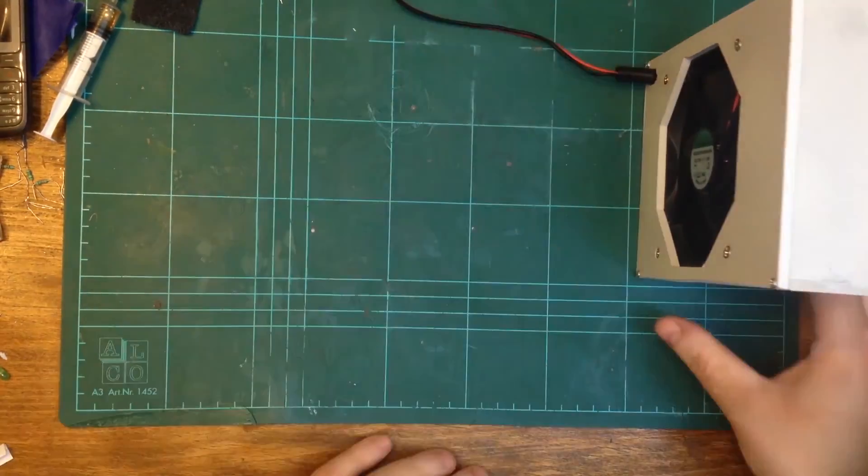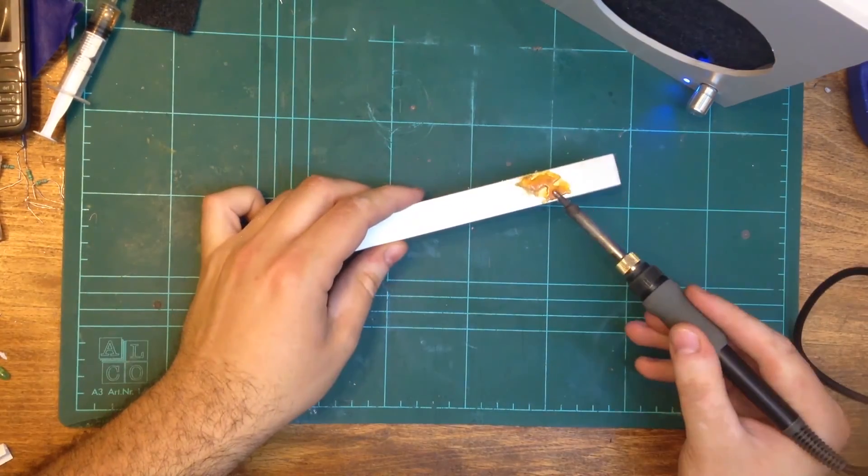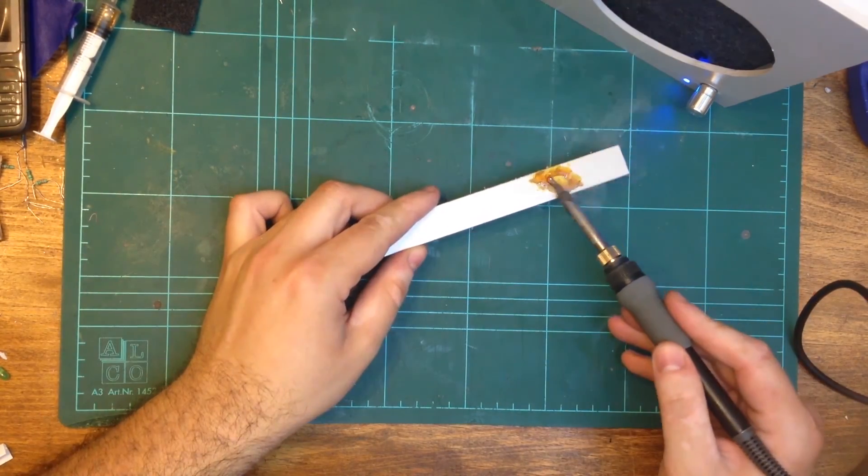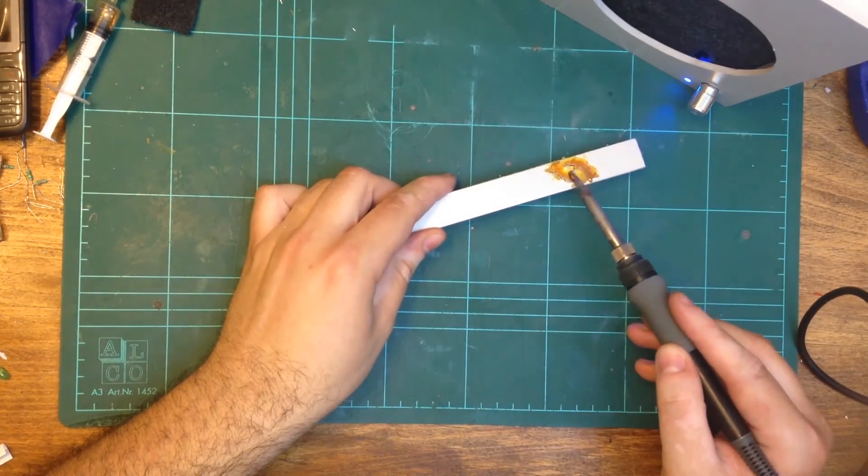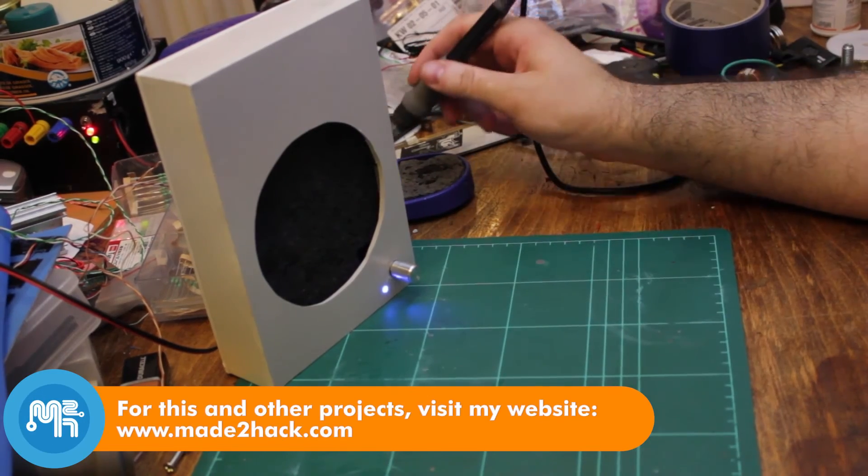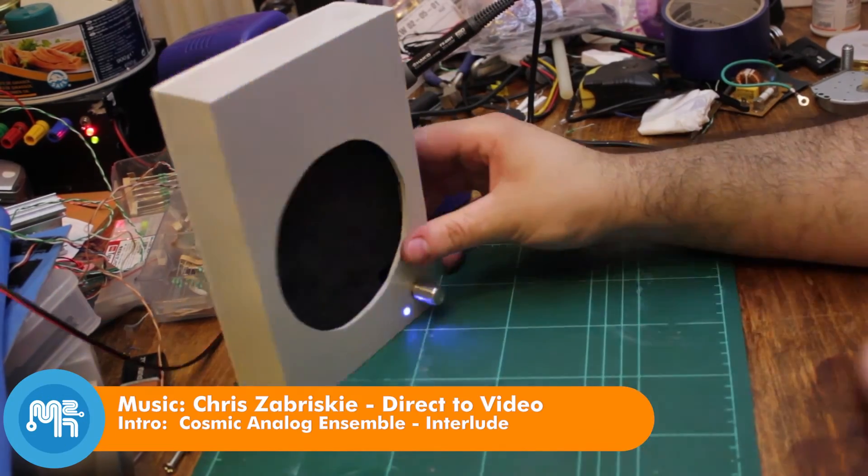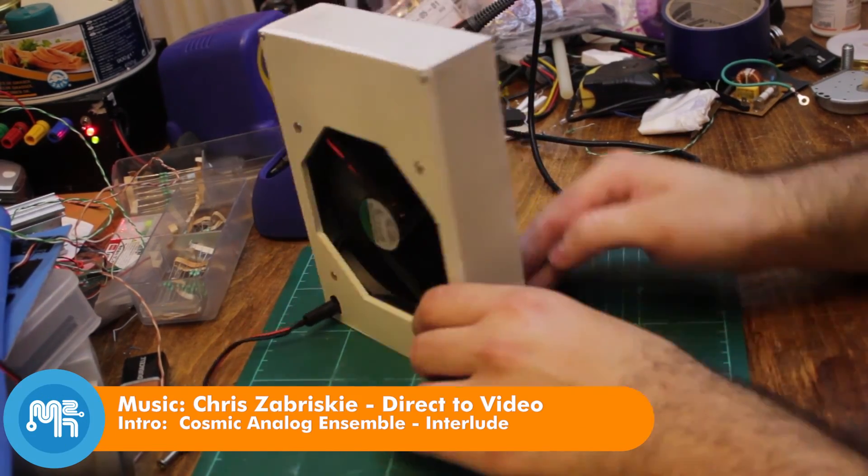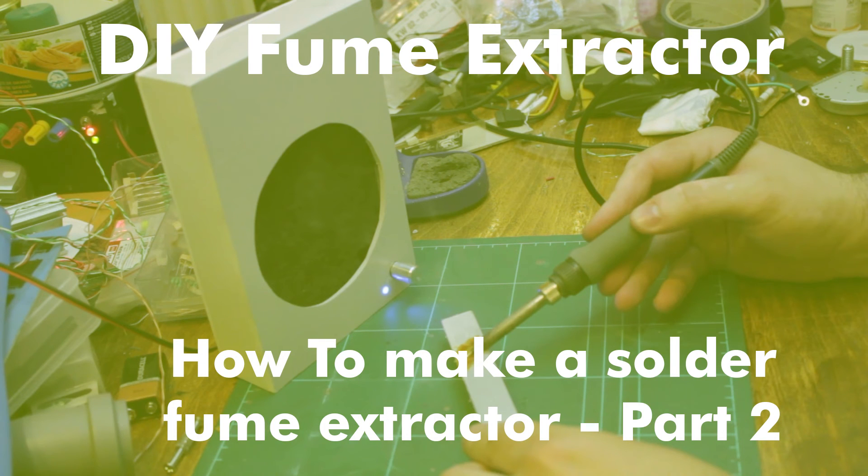Finally, I tested the fume extractor as before by melting some solder flux. The unit works fine, however the simpler cardboard unit seems to be more powerful, maybe because of the larger space between the fan and the filter.